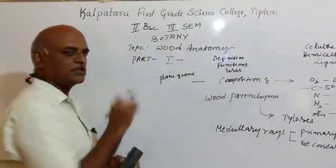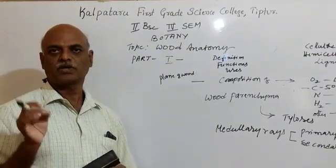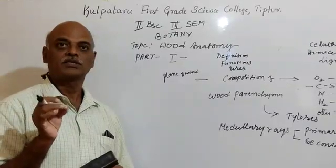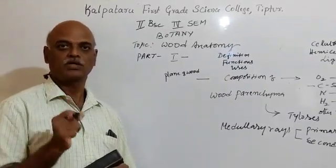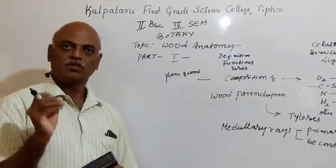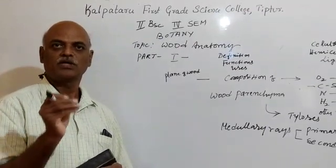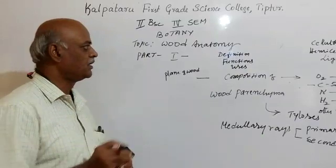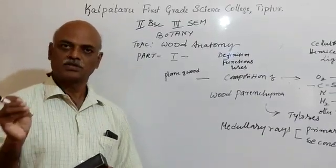Let us consider the function of wood. In the plant body, the major function performed by the wood is number one, mechanical strength. It provides mechanical strength to the plant body. Secondly, it supplies water and minerals from one part of the plant body to another in the early stage.